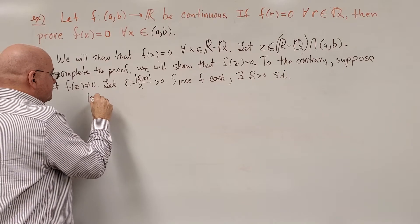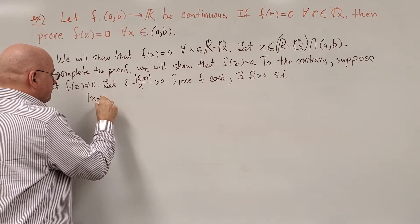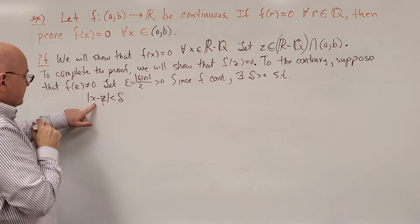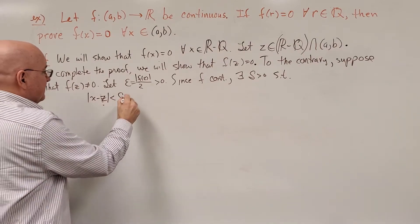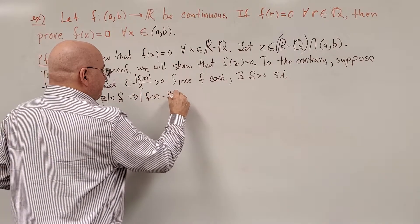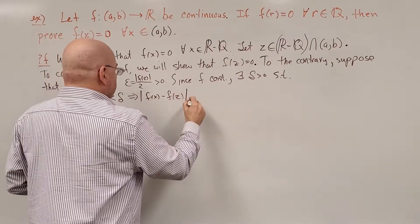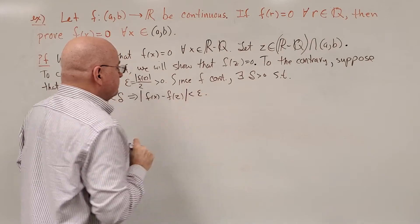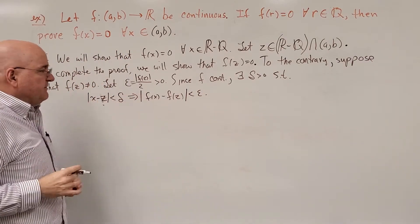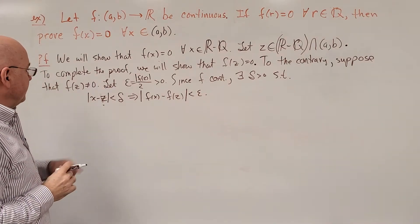for every x that's close to z, in other words, x, the distance from x to z being less than delta, implies |f(x) - f(z)| is less than epsilon. That's a true statement, just basically reciting the definition of continuous function at a point.